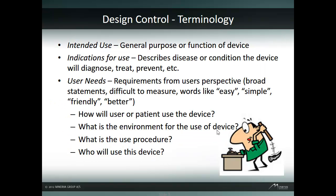Design control uses some specific terminology. Intended use is the stated general purpose or function of the device. Indication for use is the stated disease or condition that the device will diagnose, treat, prevent, etc. It is also a good practice to state the unintended use of the device.